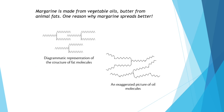Margarine is made from a vegetable oil such as olive oil or sunflower oil, but it can be spreadable like a fat such as butter — we'll discuss this shortly. Simple diagrams show fat molecules on the left and oil molecules on the right. Note that oil molecules don't pack as neatly or tightly together due to the double bonds causing kinks throughout the structure.